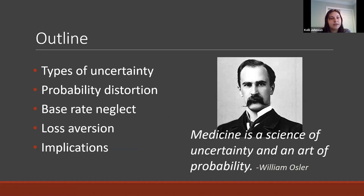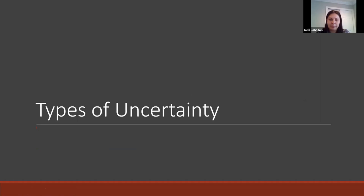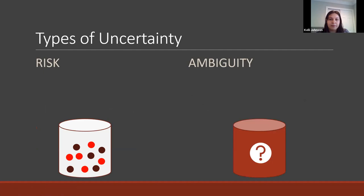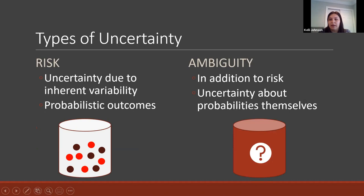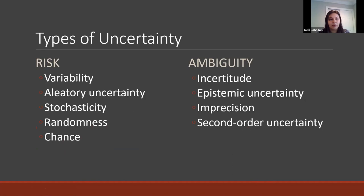The work discussed today could be applied to both situations. First, briefly, what I mean by different types of uncertainty. When I say risk, I'm talking about uncertainty due to inherent variability and probabilistic outcomes. And ambiguity is a type of uncertainty in addition to that risk — often about probabilities themselves.